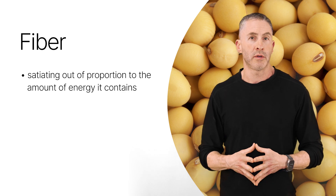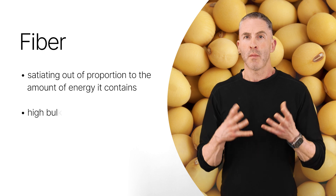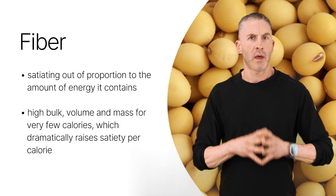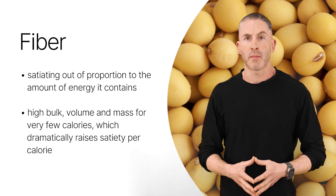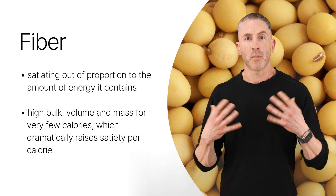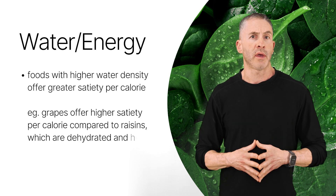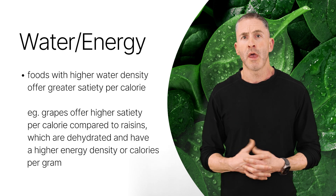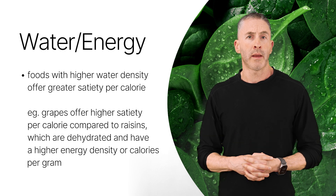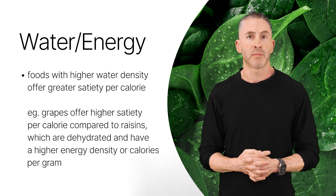The higher the protein content of any food, the less an animal tends to consume, because protein offers higher satiety but provides significantly fewer energy calories than other macronutrients. Another major factor is fiber — fiber is satiating out of proportion to the amount of metabolizable energy it contains. Fiber gives you bulk, volume, and mass for very few calories, which dramatically raises satiety per calorie. Water and energy density also matter: grapes, for example, offer higher satiety per calorie compared to raisins, which are dehydrated and have a much higher energy density.